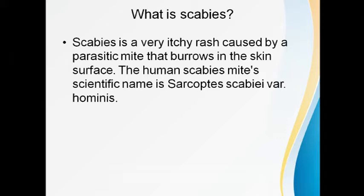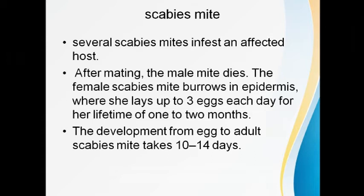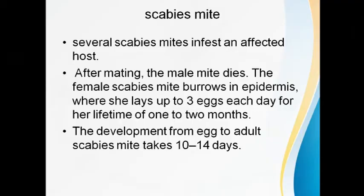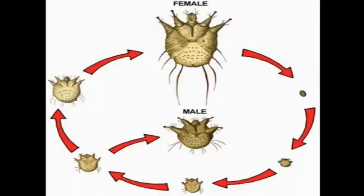Scabies infestation happens by direct contact. When someone has scabies and you come into contact with them, the mites transfer to your body. The male mite dies after mating. When male and female mites are both present on a body, they mate, the male dies, and then the female mite burrows into the epidermis. It is an oviparous organism, laying up to three to four eggs.